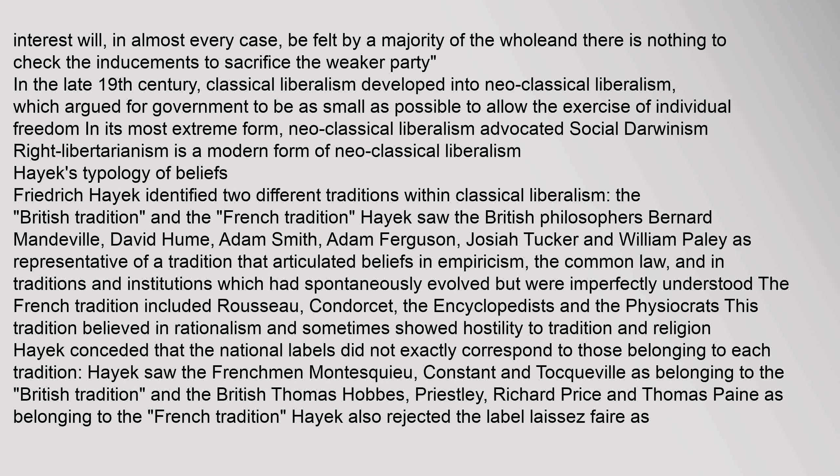In the late 19th century, classical liberalism developed into neoclassical liberalism, which argued for government to be as small as possible to allow the exercise of individual freedom in its most extreme form. Neoclassical liberalism advocated social Darwinism, with right libertarianism as a modern form of neoclassical liberalism.